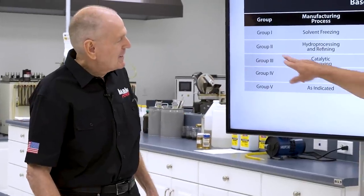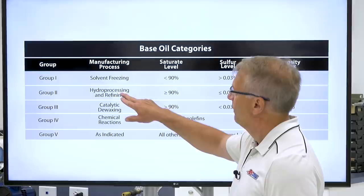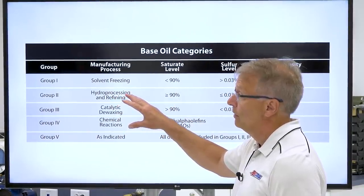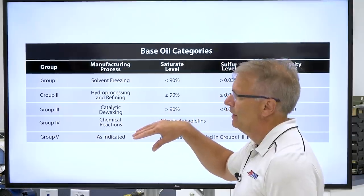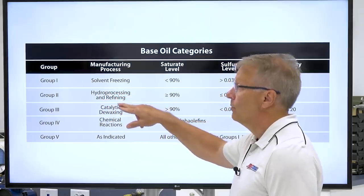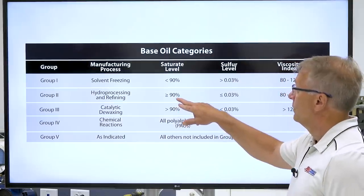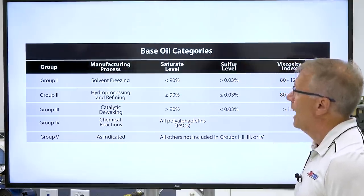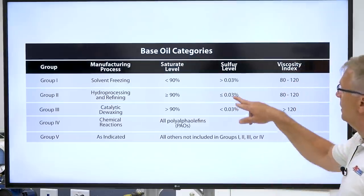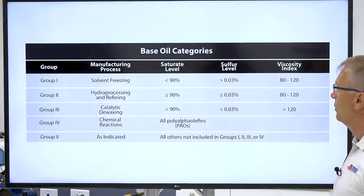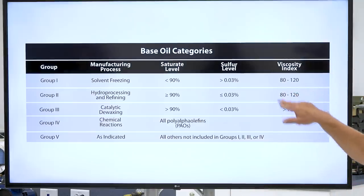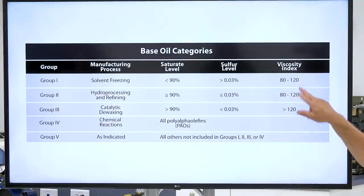Moving to a little more refining: hydroprocessing attaches hydrogen molecules onto the base oil molecule and gets rid of free radicals and double and triple bonds. More hydroprocessing and chemical refining brings the saturate levels up. The requirement is to be above 90% on that saturate level — the higher the better for saturating the molecule. You start to get sulfur levels down below 0.03%, getting more contaminants out of the system. The viscosity index remains generally the same between Group I and Group II, around the 80 to 120 level.